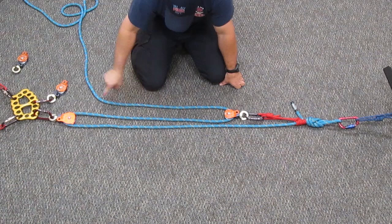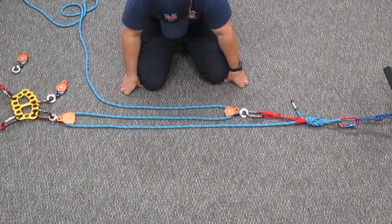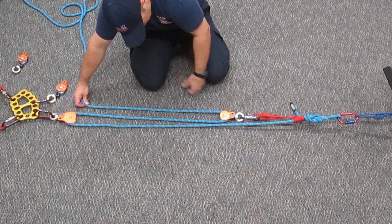A 3-to-1 is also known as a Z-rig because it takes the shape of a Z. We can tell that this is a 3-to-1 because we have three strands of rope that are holding back the load.